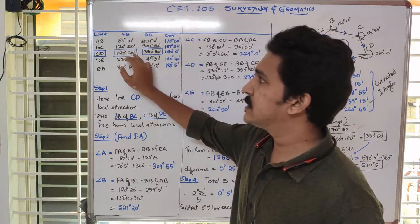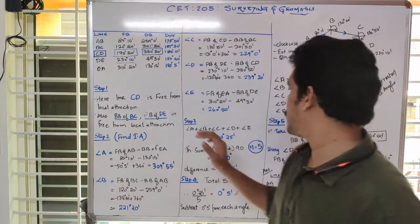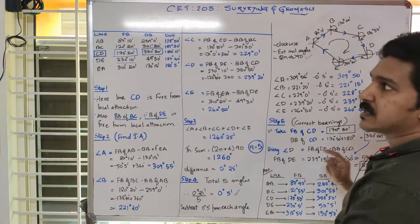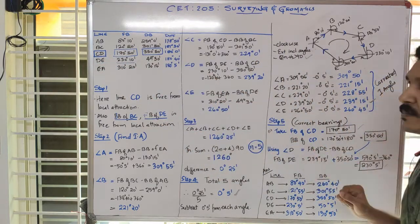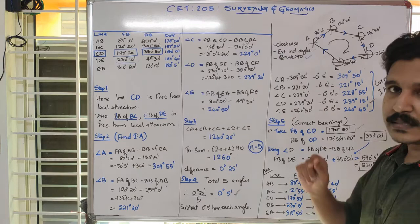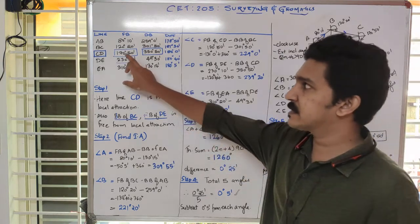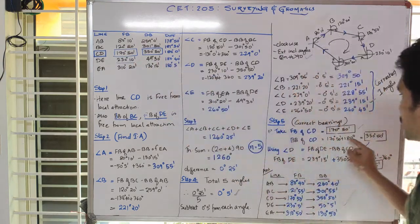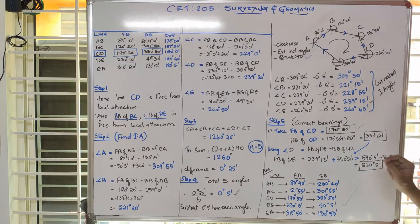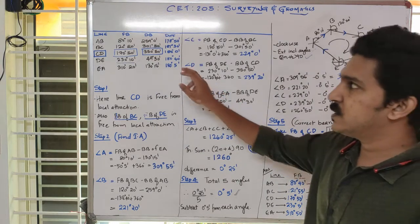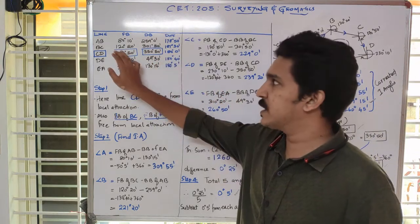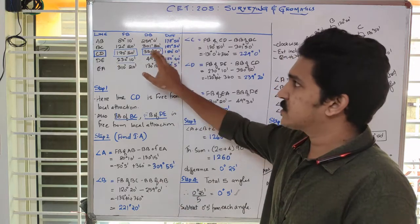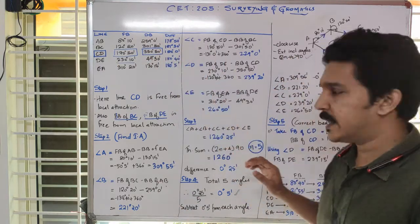Starting with the forebearing of CD at 170 degrees 50 minutes, the backbearing is plus 180. Because the value is less than 180, we add 180 to it, giving us 350 degrees 50 minutes. We know this value is correct — forebearing is given, and backbearing differs by 180 degrees. So we know this value.